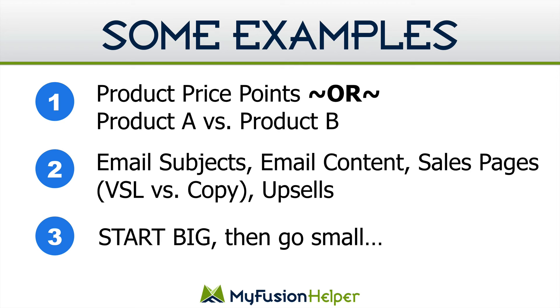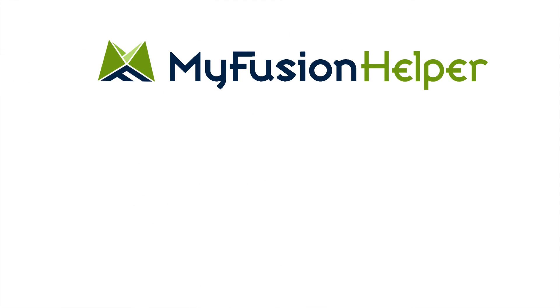Another thing to keep in mind: consider using the 10-10-80 approach we talked about at the beginning. You take 20% of your list, run an A-B split test, find the winner, and then send the remaining 80% of your traffic to the winner. That is a system that works very well and is super easy to do — you don't need anything more than this Split Basic feature in the app. This is Troy Broussard signing off. I hope that gave you some good ideas and gets you rolling with split testing in your business. If you need more help, reach out on the help desk at help@myfusionsolutions.com.